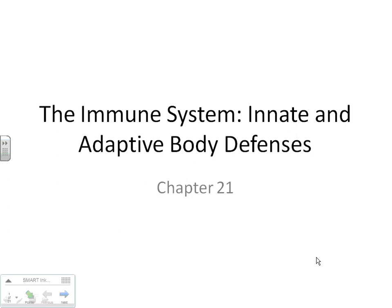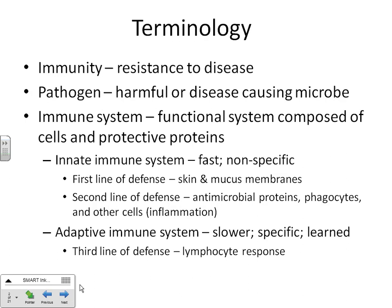Today we're going to finish up Chapter 21. Since you've had a test, let's make sure you remember what we've done so far. With the immune system, we have two parts: the innate immune system and the adaptive immune system.